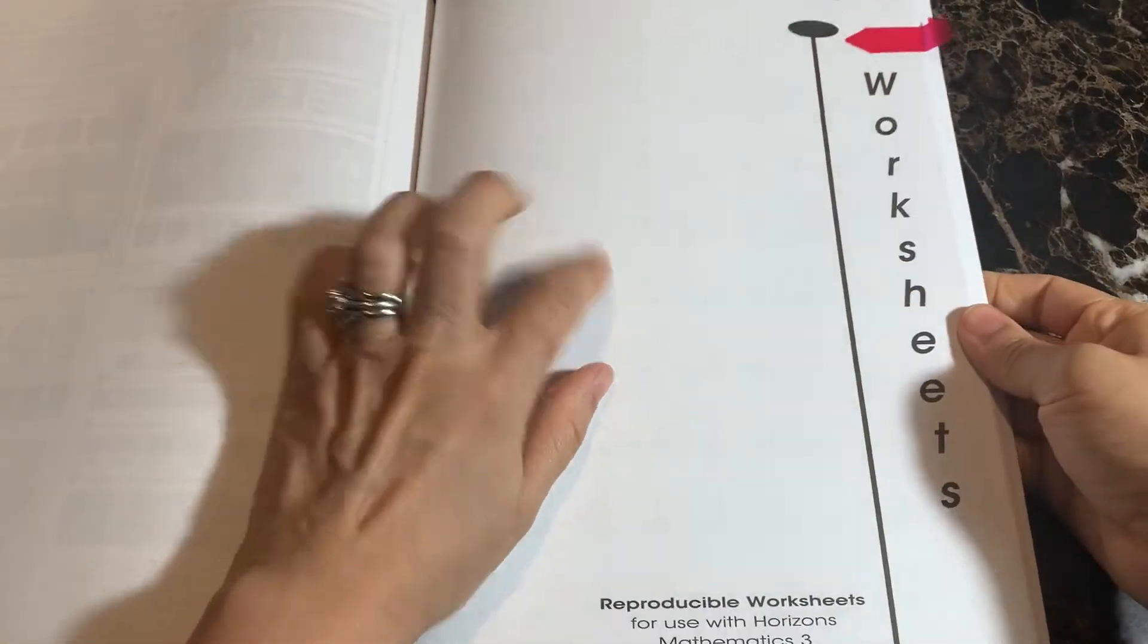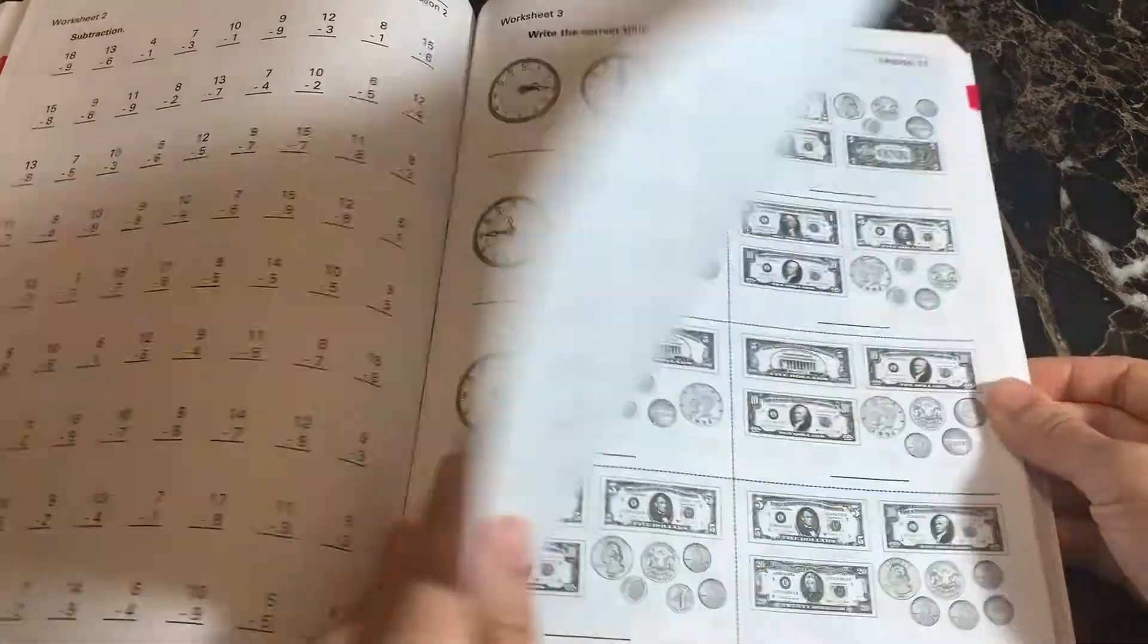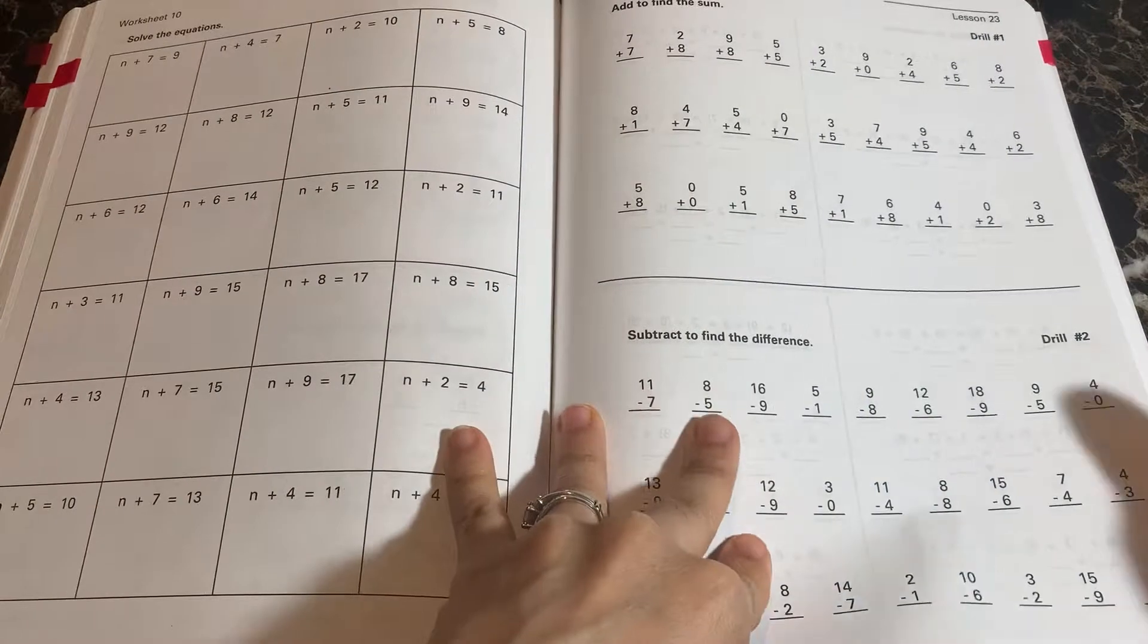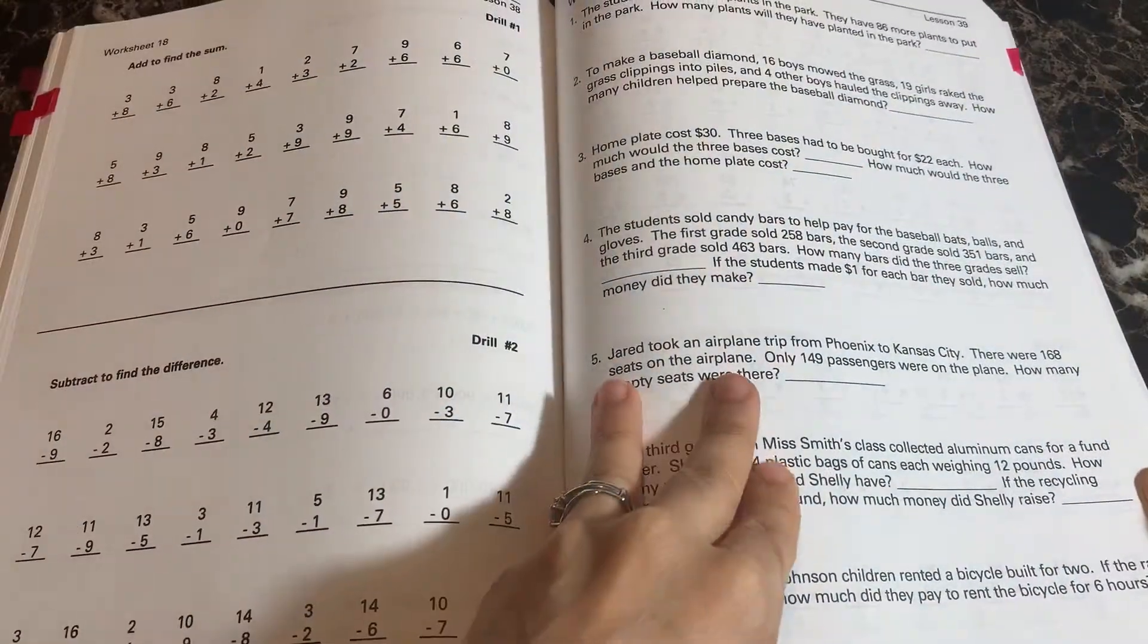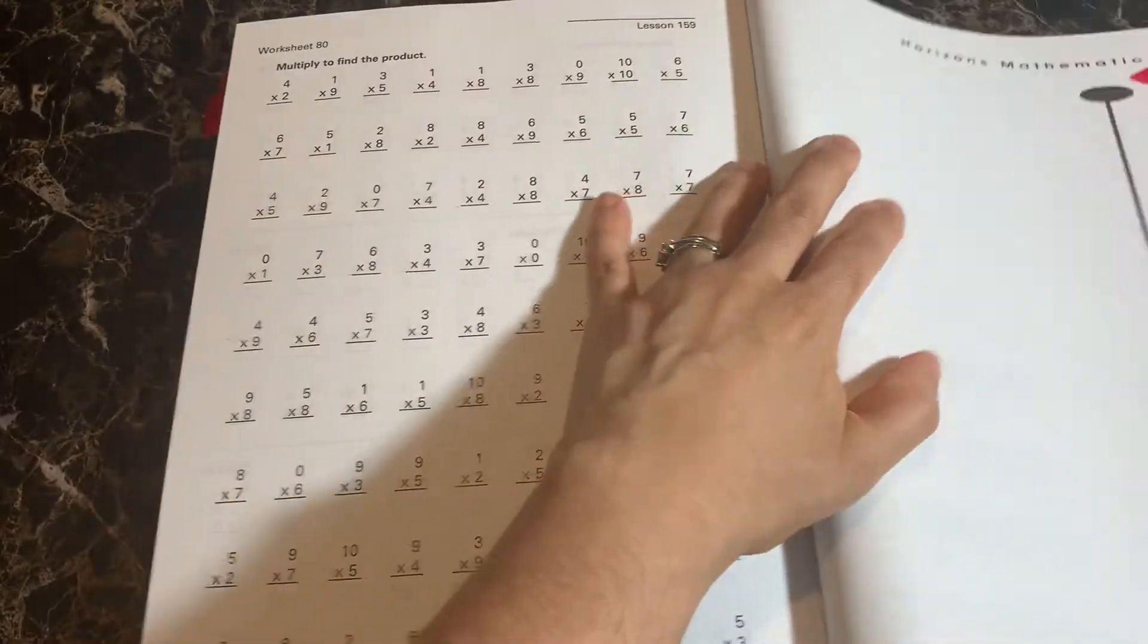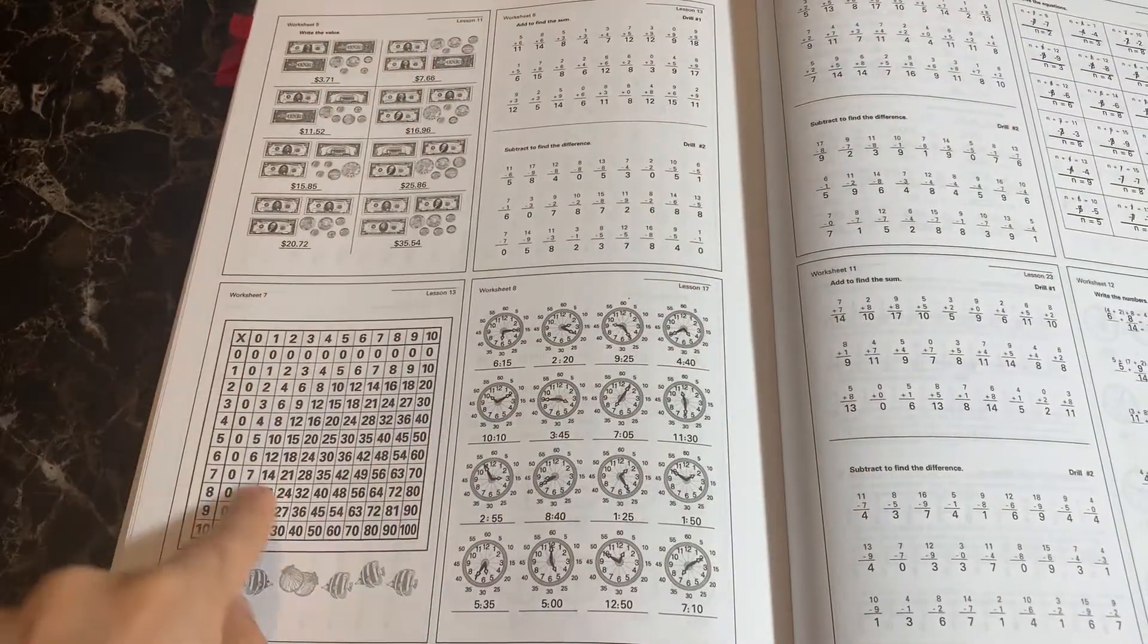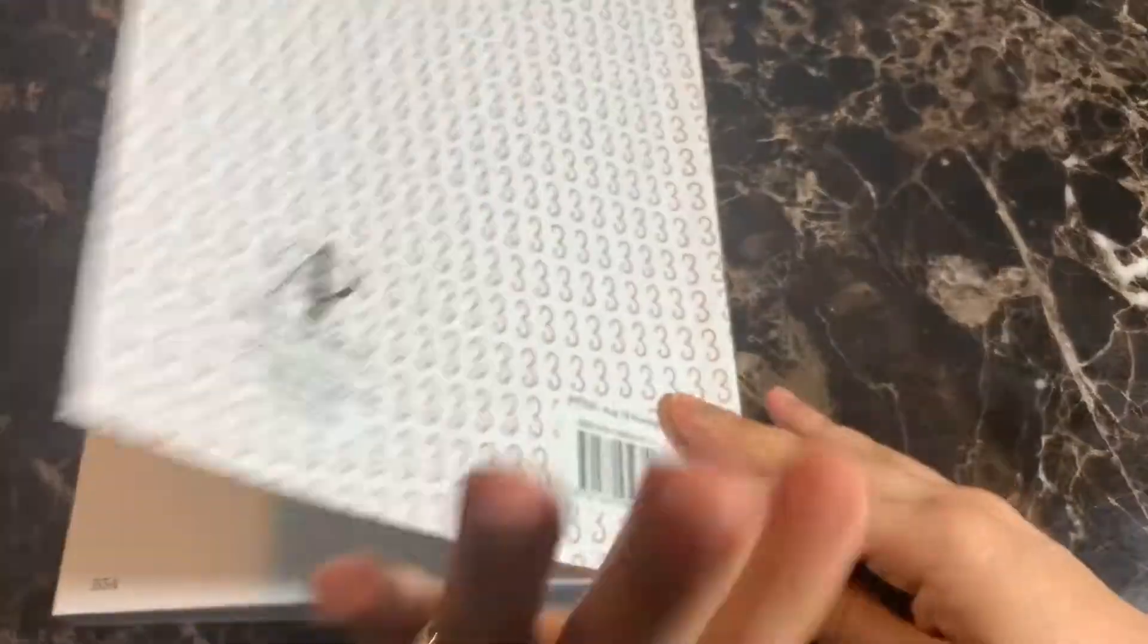Another thing that's included is also the test key is within this section. So if you notice here after lesson 10 is test one. So test one's answer key laid out in the same exact way. So this section is your complete answer key for all of the lessons, as well as for the tests. Okay, the next section in your teacher key will be the worksheets. This is what I had mentioned that I don't use very often, but it is a great option. So here on top, it'll tell you worksheet one. It has them all numbered.